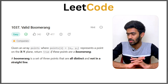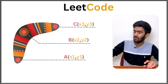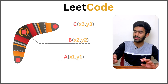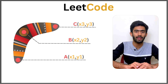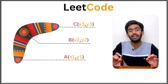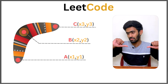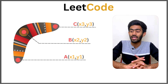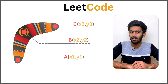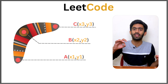It's a very simple condition. We have to check whether the given points are in a straight line or not. Let's say a, b, c are the points — we have to check whether these three points form a boomerang. A boomerang is a set of three points that are all distinct and not in a straight line. If they are in a straight line, they do not form a boomerang; if they are not in a straight line, then they form a boomerang.